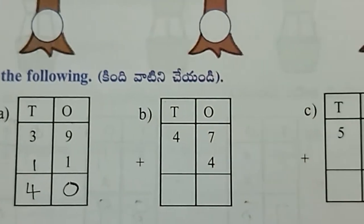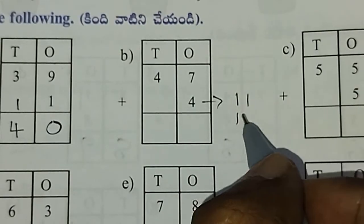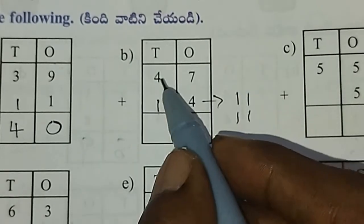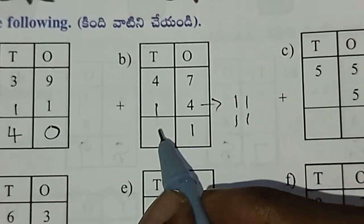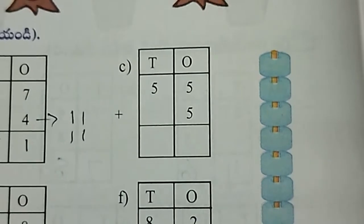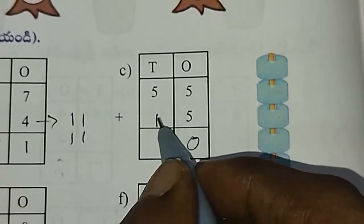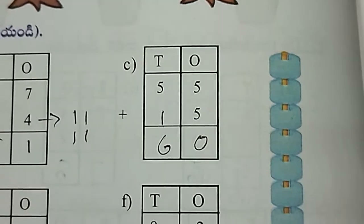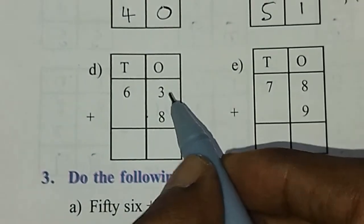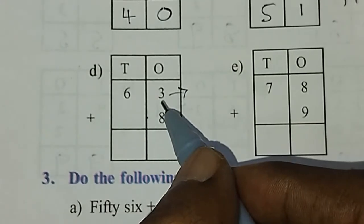Next, 7 plus 4. Draw 4 lines starting from 7. After 7 is 8, 9, 10, 11, so 1 and 1. Next, 4 plus 1 equals 5. Next, 5 plus 5 equals 10. Next, 5 plus 1 equals 6.